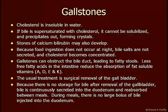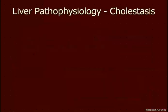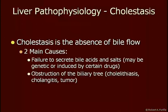Another pathology involving bile is called cholestasis. Cholestasis is the absence of bile flow. There are two main causes: one is the failure to secrete bile acids and salts, which could be genetic or caused by certain drugs. Cholangitis, a tumor, stenosis, and other forms can also occur which will block the bile duct. That ends this talk on bile formation, secretion, and function.